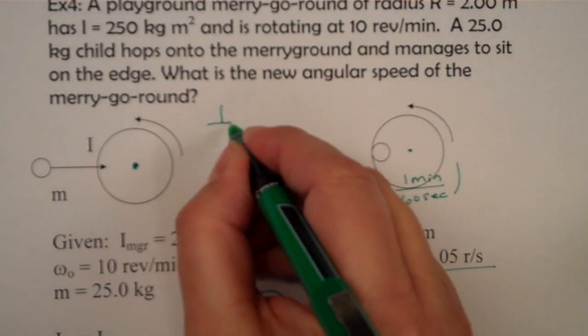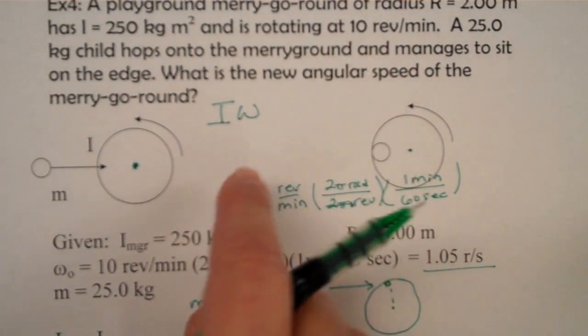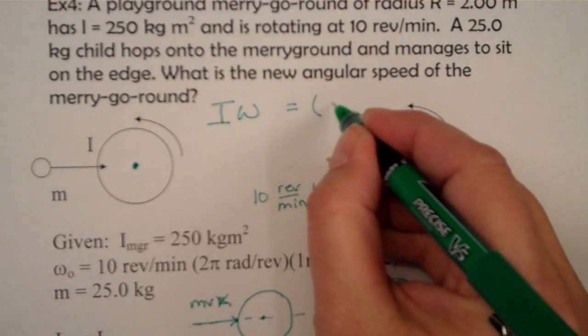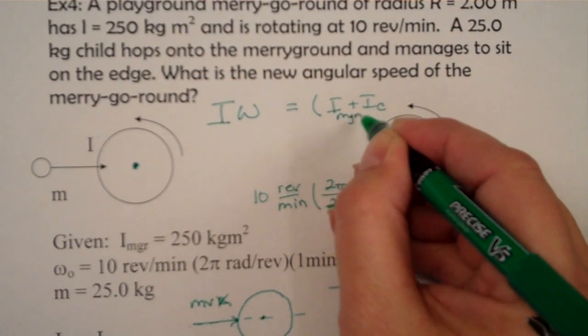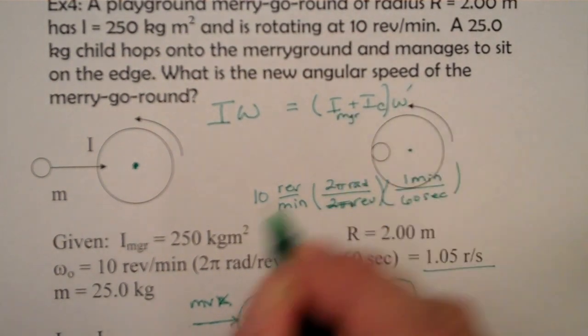So, we can think of at the beginning, this had a high speed and not much inertia. And at the end, two things rotating. So, more inertia, the child and the merry-go-round. And that's going to make a slower speed.